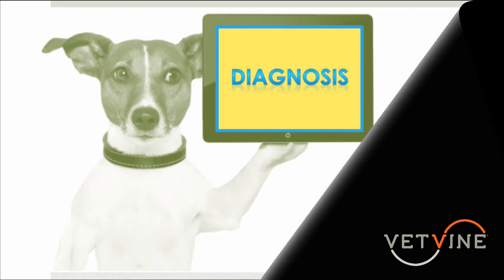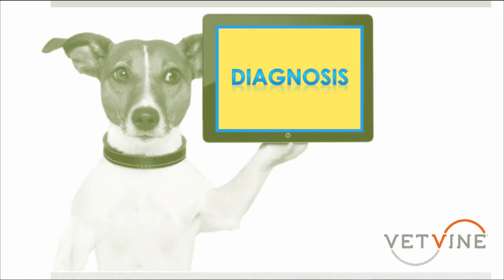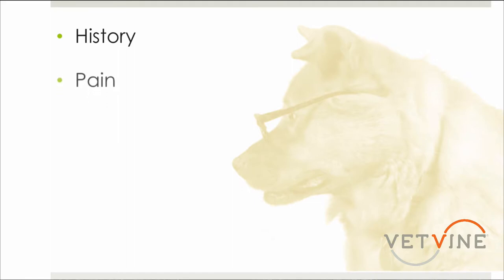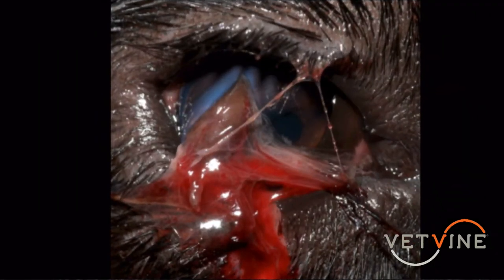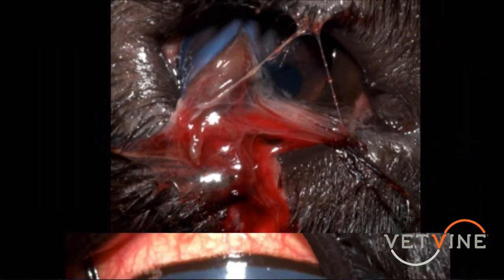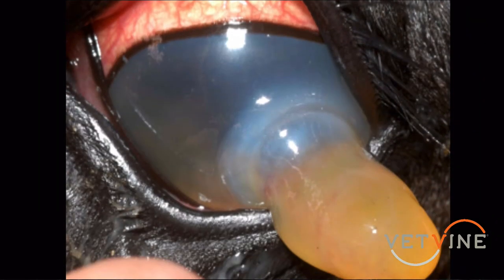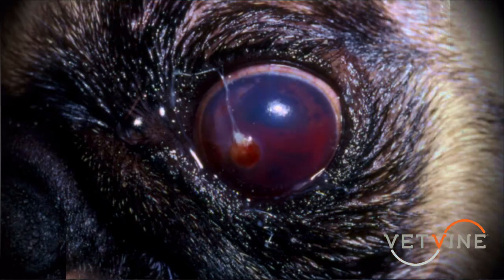So how do we diagnose these injuries? There may be a history that somebody saw a cat scratch to the eye, or that the animal has just come back from being out and about. These eyes are typically painful and we may see a variety of different clinical signs or appearance to the eye, depending on the extent of the injury.